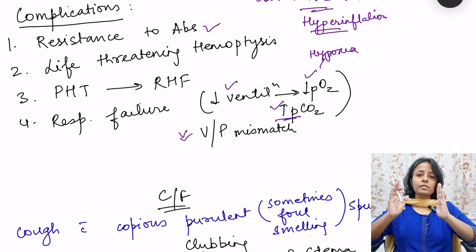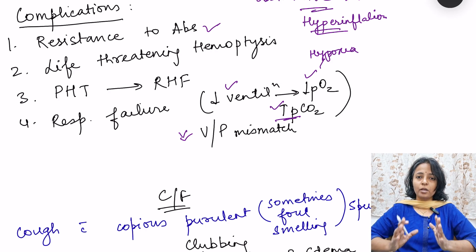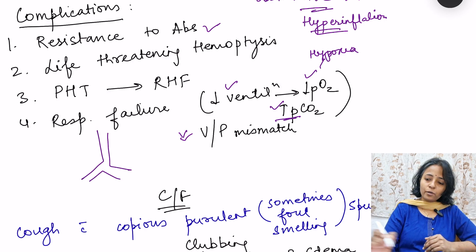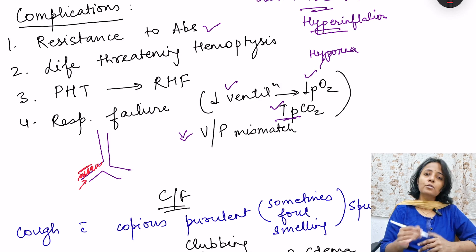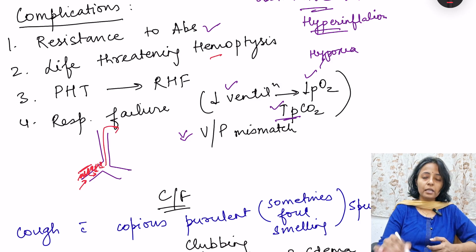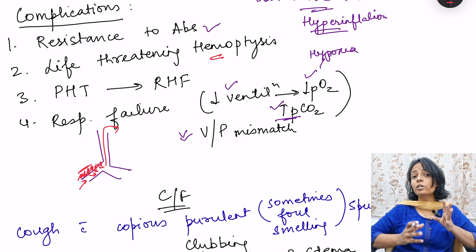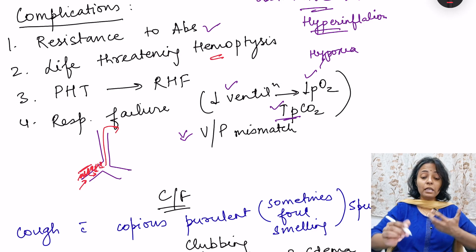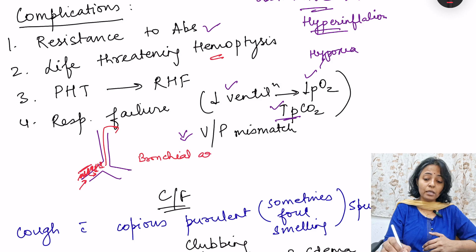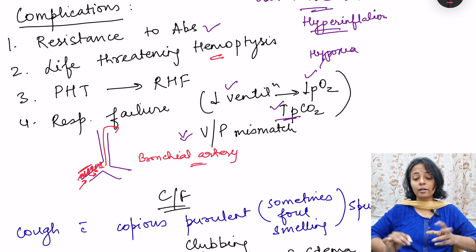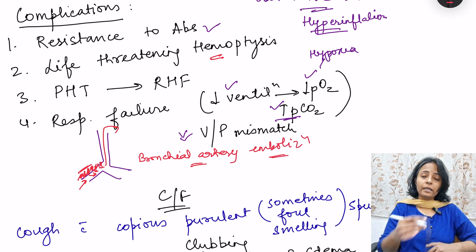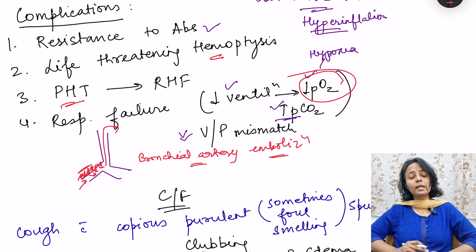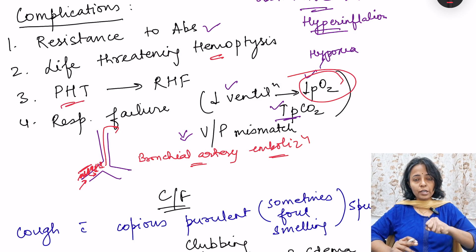Because there is destruction of the airway walls, the blood vessels running alongside are also destroyed, allowing blood to enter the airways. This blood is coughed up — that is hemoptysis. Sometimes hemoptysis can be life-threatening when major vessels are affected, requiring bronchial artery embolization. Long-standing hypoxia causes pulmonary vessels to vasoconstrict, leading to pulmonary hypertension, which ultimately leads to right heart failure.